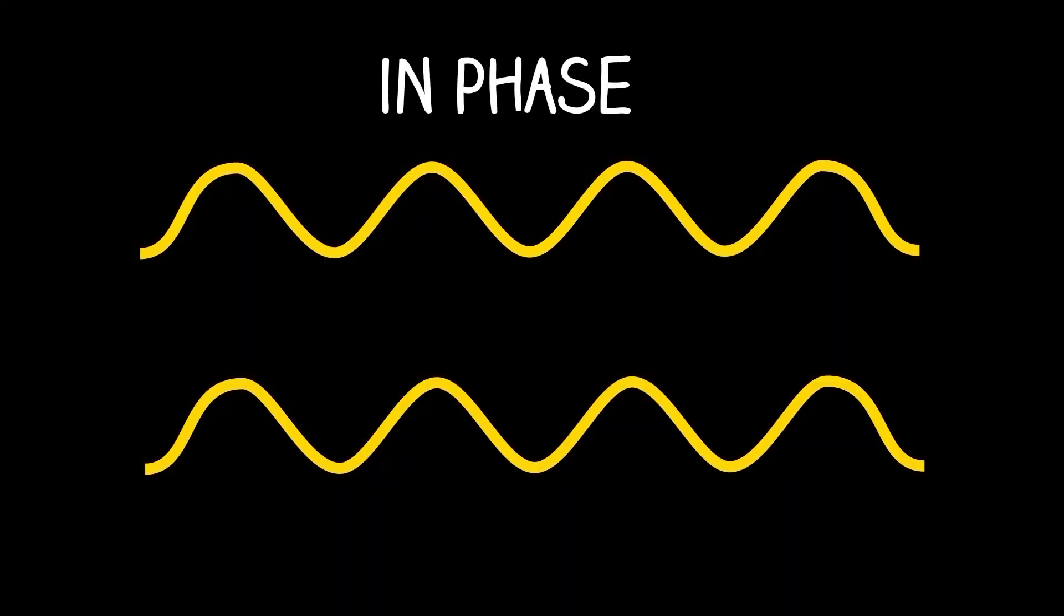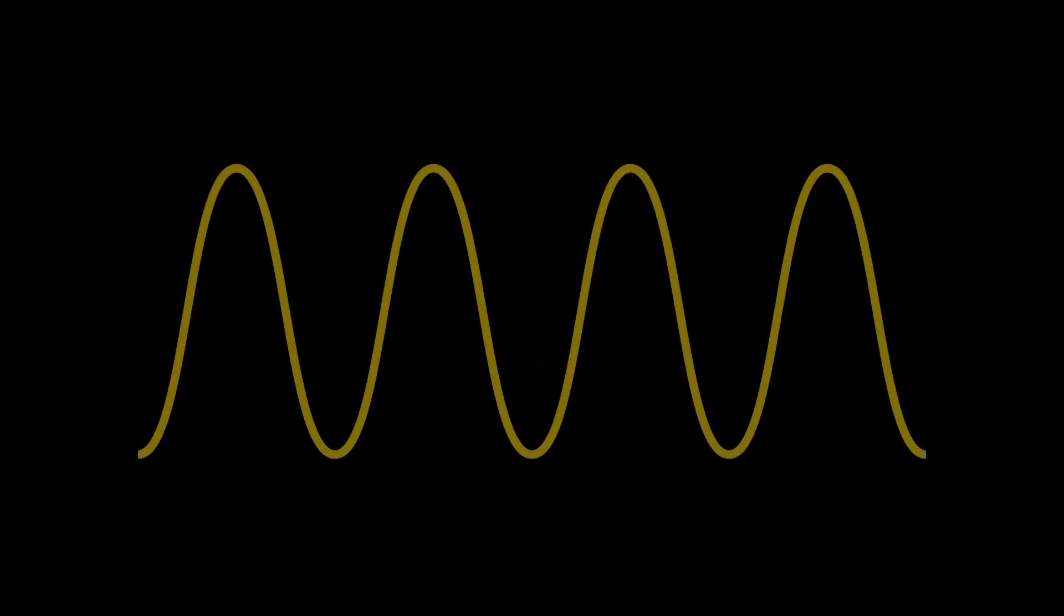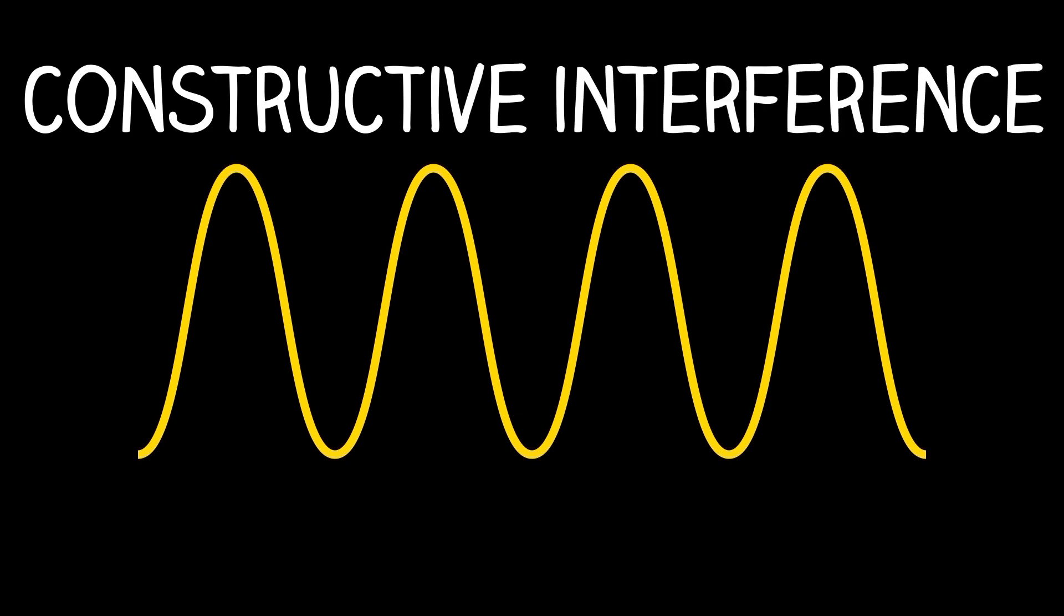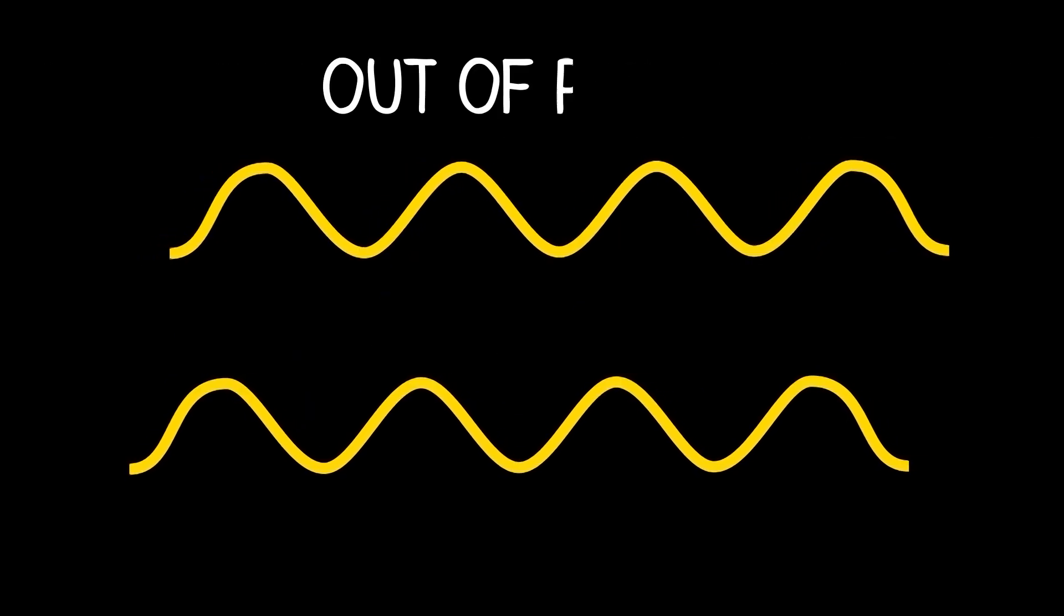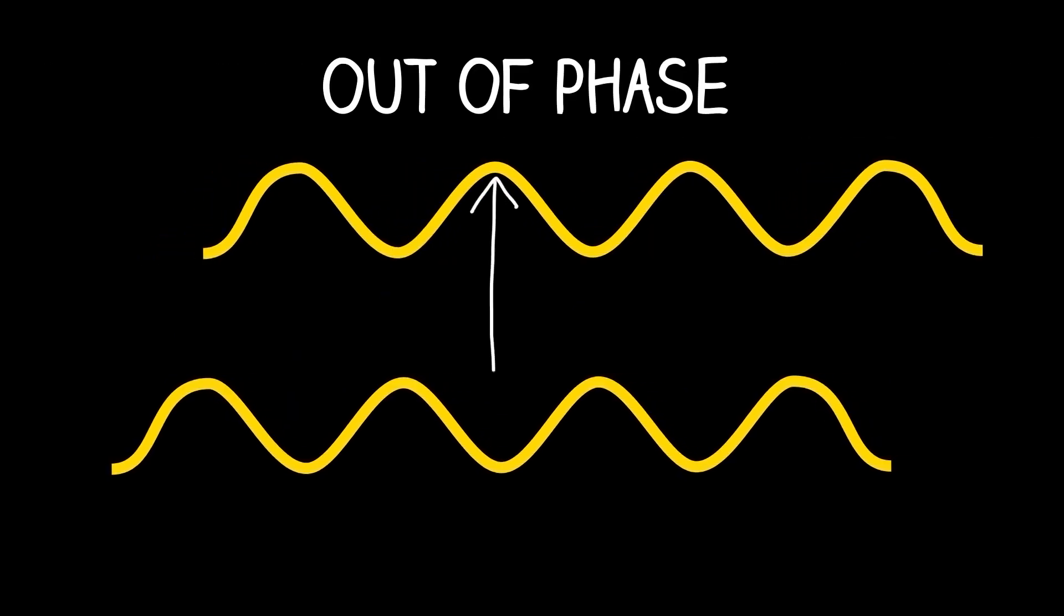If they're both in phase—that is, if their peaks and troughs line up—they amplify each other in a process called constructive interference. If they're out of phase—that is, one wave's peaks line up with the troughs of the other wave—they'll cancel out in a process called destructive interference.